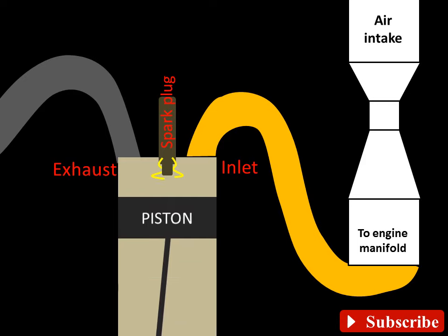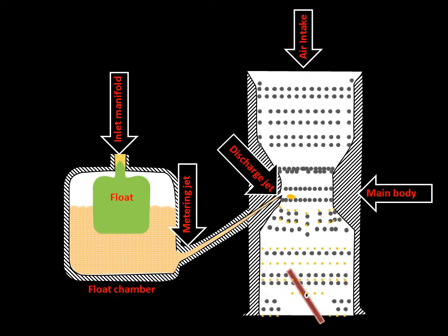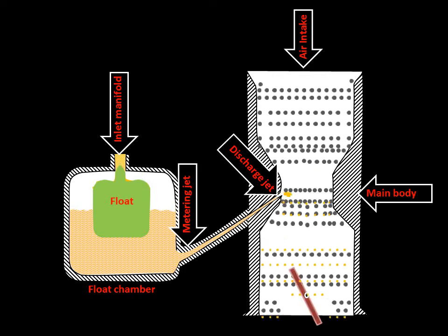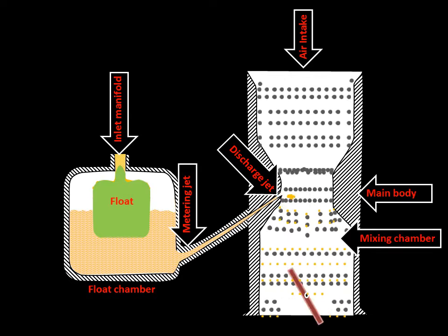The air passes the discharge jet on its way to the cylinder, causing the fuel to rise in the jet to be delivered to the mixing chamber in the form of fine spray.